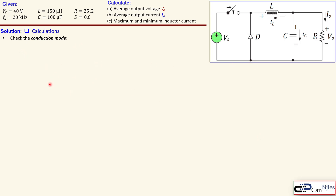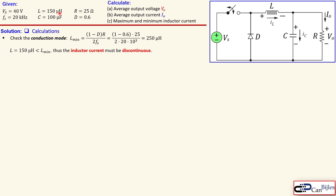Let's check the conduction mode step by step. We need to look at L_minimum — the minimum inductor value needed in this circuit — given by a specific expression involving the duty cycle, resistor, and switching frequency. Substituting our values gives 250 microhenries. Since our L of 150 microhenries is smaller than 250 microhenries, the inductor current is discontinuous, so we are in the discontinuous current mode.